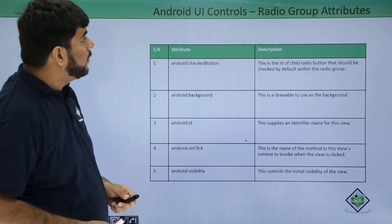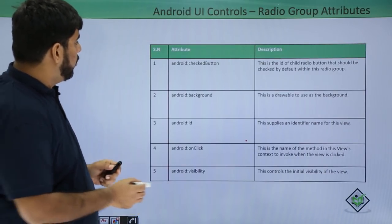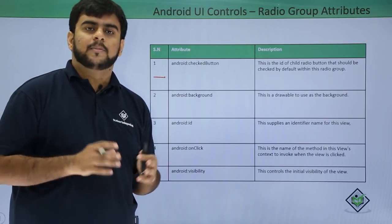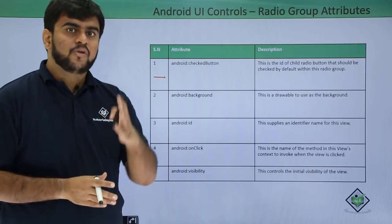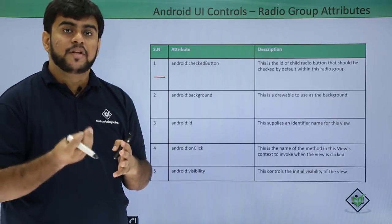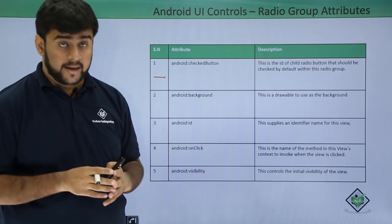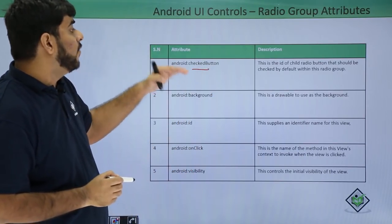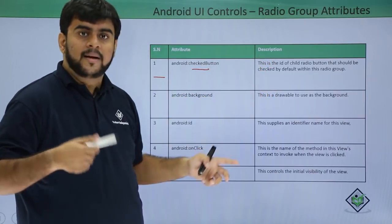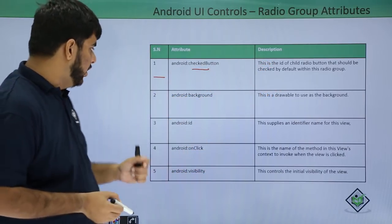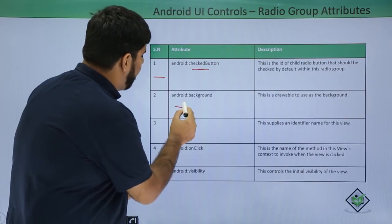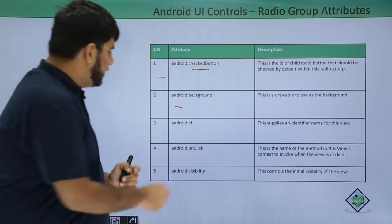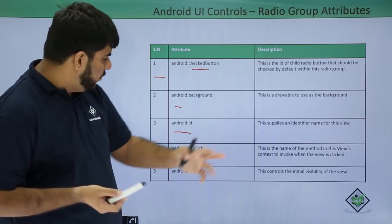Now let's look at the attributes for the radio group. The very first is the checked button. The best advantage of using a radio group is that you can find out which button in the group is clicked using the attribute checkedButton. This checkedButton will return which element is checked by default. After this we have background, which is a drawable used as the background for the radio group. Then we have the id, which is the name for the view.